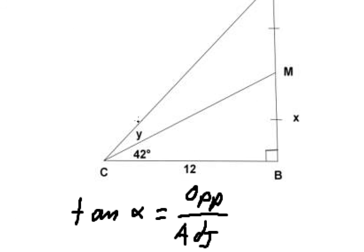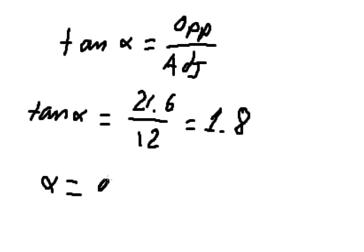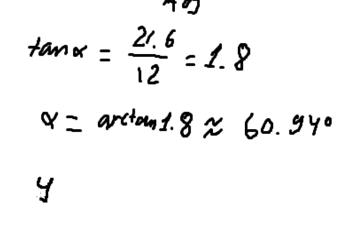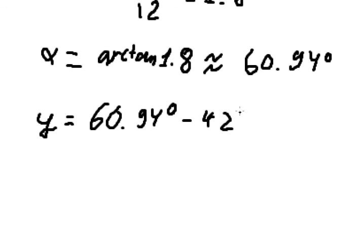Now we need to find the angle, and then subtract 42 degrees to find the value of y. The angle is approximately 60.94 degrees. We then subtract 42 degrees to get the final answer: y is approximately 18.95 degrees. That's the final answer. Thank you for watching.